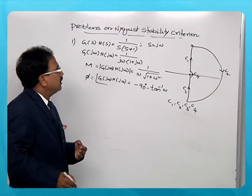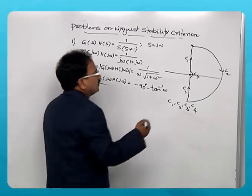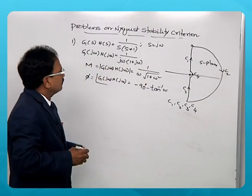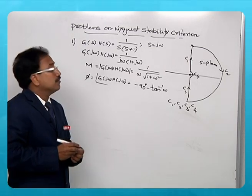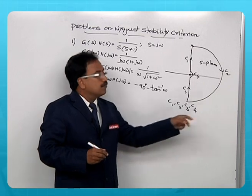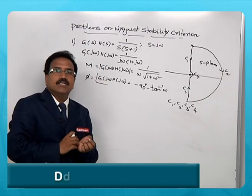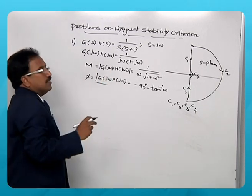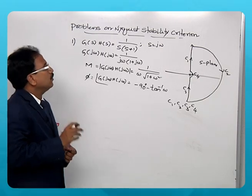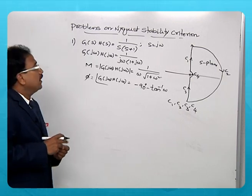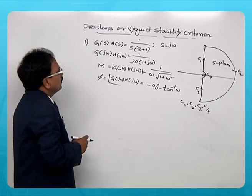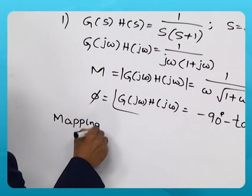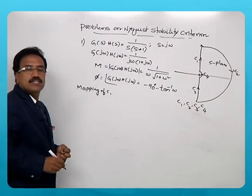All four sections must be mapped into the G(s)·H(s) plane. This is the S-plane, and we need a G(s)·H(s) plane where every point of these four sections must be mapped — that is nothing but the Nyquist plot. This system is a minimum phase system with only poles; there are no zeros in the given function. The mapping of section C1 is nothing but the polar plot.